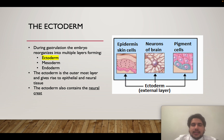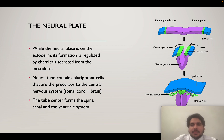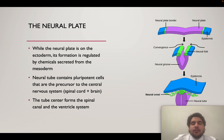The neural plate itself sits on the ectoderm, but its formation is regulated by chemical messengers secreted not by the ectoderm but by the middle layer — the mesoderm. As development is ongoing, the neural plate curves up and forms a U-shape, ultimately forming a hollow tube called the neural tube, which is very important for the development of the nervous system.